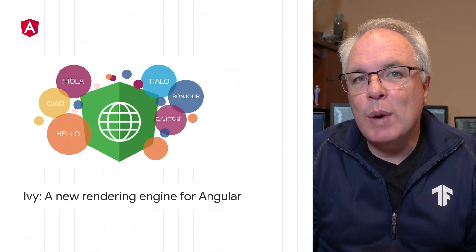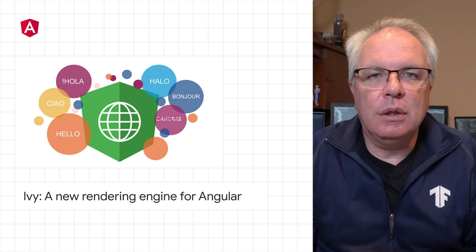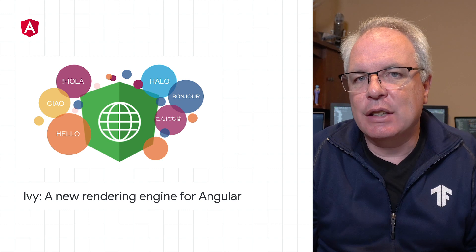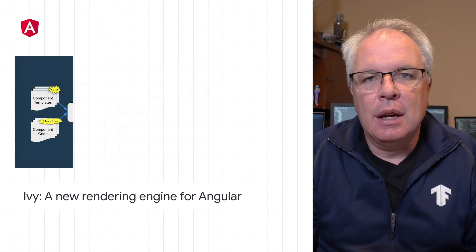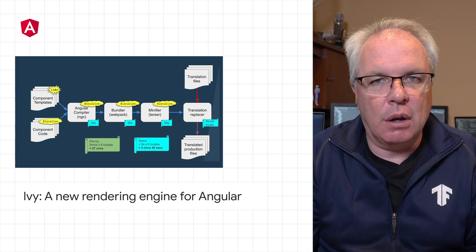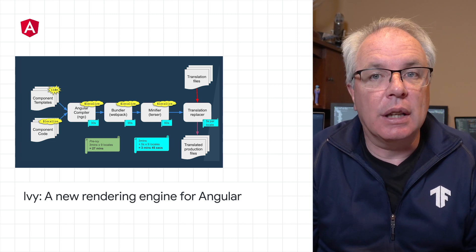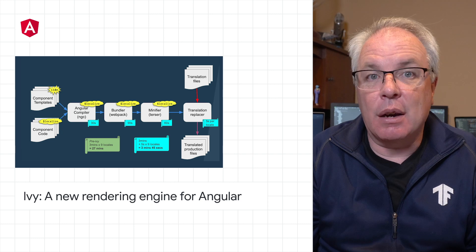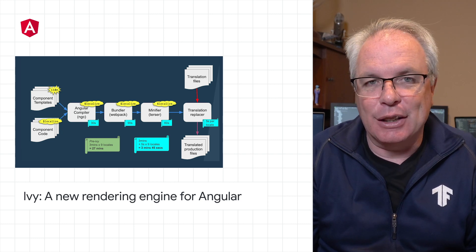Angular has a new rendering engine called Ivy, and this includes a new approach to localizing text and how you can extract and translate text. This new approach is based around tagging strings in your code with a literal tag handler called string localize. Then any strings that need to be localized are marked just using that. Go learn more about it at the Angular blog.